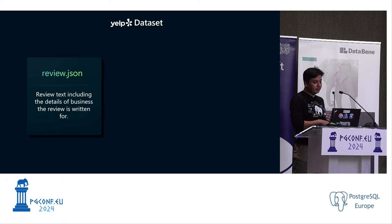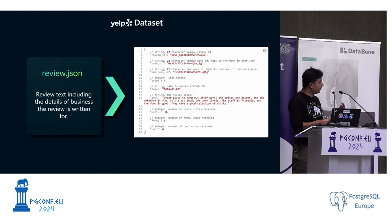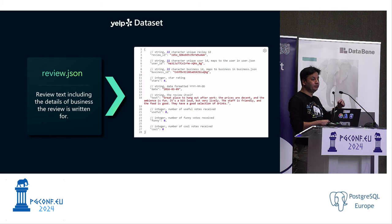The other important table is the review dataset. A lot of information to combine, but the key column is the text — for example, 'a great place to hang out after work, the prices are decent.' Each and every word in this review can help us find a great coffee spot.